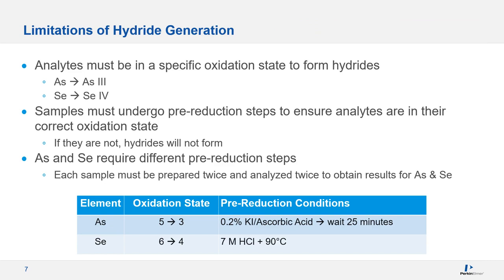Hydride generation does have some limitations. The analytes must be in a specific oxidation state to form hydrides. For example, arsenic must be in the plus-three state and selenium must be in the plus-four state. Arsenic in the plus-five state will form hydrides a little but not very efficiently, and selenium-6 will not form hydrides at all.